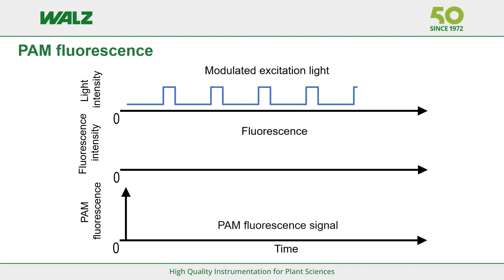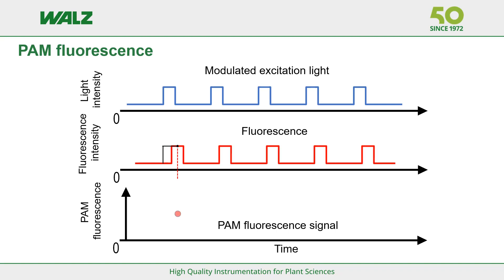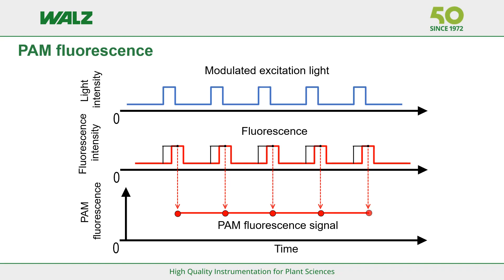The PAM principle: PAM stands for Pulse Amplitude Modulated, meaning the instrument will only measure fluorescence induced by modulated light — therefore called measuring light. Light applied to a photosynthetic sample induces fluorescence; modulated light induces modulated fluorescence. The instrument measures the difference between the fluorescence value at the beginning of the modulated pulse and at its peak. As long as the PAM fluorescence intensity does not change, the photosynthetic state of the sample does not change. The photosynthetic state can be changed by application of continuous actinic light, the consequences of which — more reduced Qa- — increase the amplitude of modulated fluorescence and thereby the PAM fluorescence intensity.